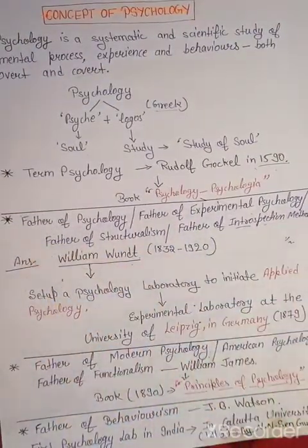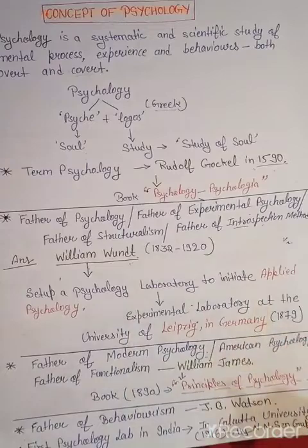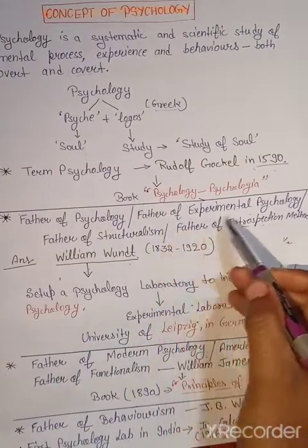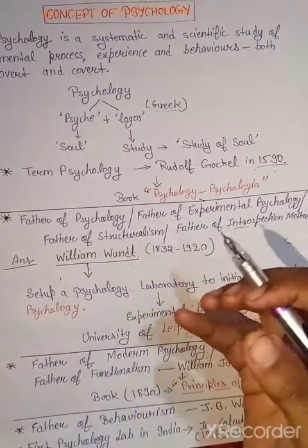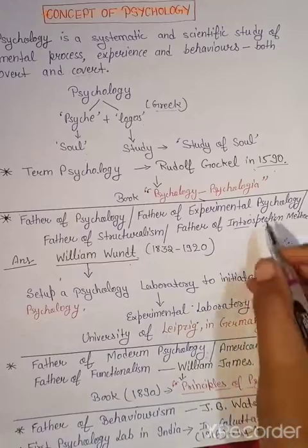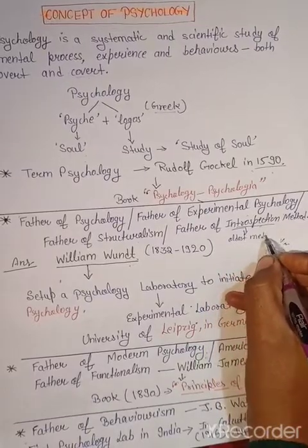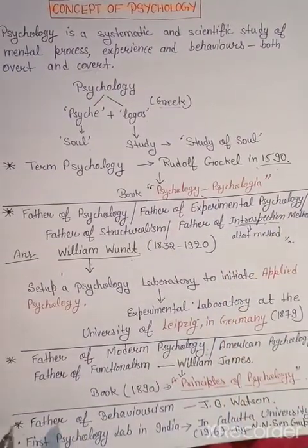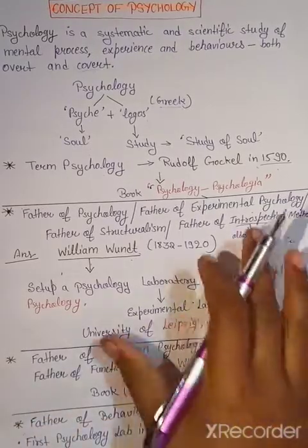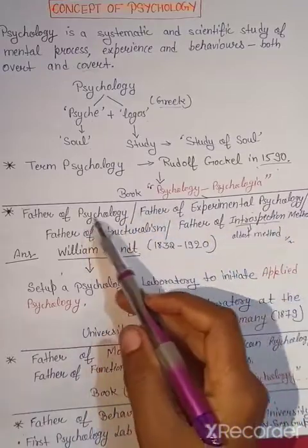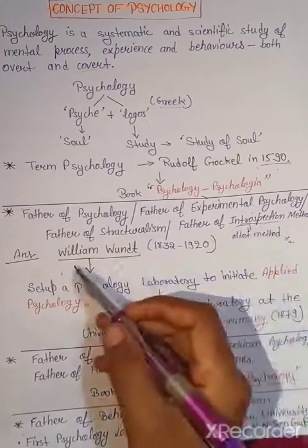अब बात कर लेते हैं father of psychology कौन है — William Wundt. इनको और नामों से भी जाना जाता है: father of experimental psychology, father of structuralism — क्योंकि इन्होंने structuralism schools के बारे में बताया था — और father of introspection method. यह introspection method psychology का oldest method है. तो एक ही question में हमने कितने cover कर लिए: father of psychology, father of experimental psychology, father of structuralism, father of introspection method — सब William Wundt.